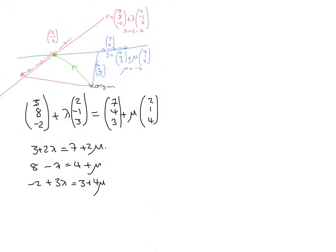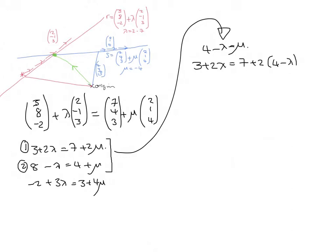Simultaneous equations. Let's take any two and solve them. Let's take these two. So I'm going to take the second one and rearrange it to say μ equals 4 - λ. Then I'm going to put that into the first one. 3 + 2λ equals 7 + 2μ. Let's not forget about number 3 here. Let's solve this equation. We get 3 + 2λ equals 7 + 8 - 2λ. So, 4λ is 15 to 12, and then λ is 3.